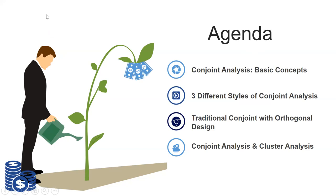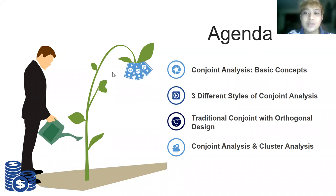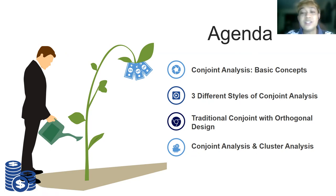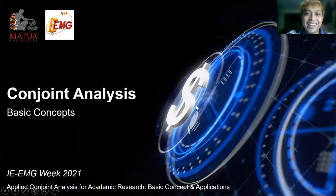This is the agenda. I would like to explain what conjoint analysis is, and then three different styles of conjoint analysis: traditional conjoint analysis, orthogonal design — which is very advanced — and conjoint analysis combined with cluster analysis at the same time. That last one is usually for the PhD program. I'll perhaps explain just up to the orthogonal design.